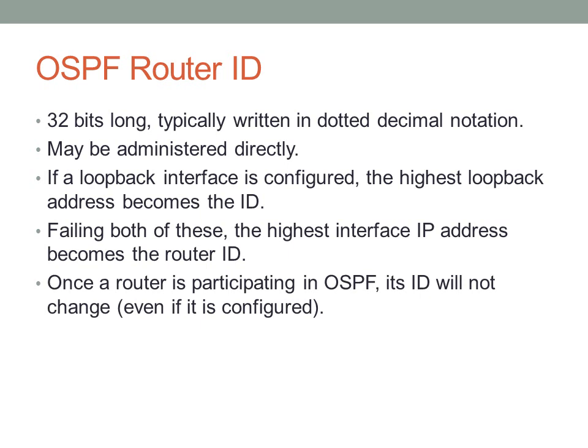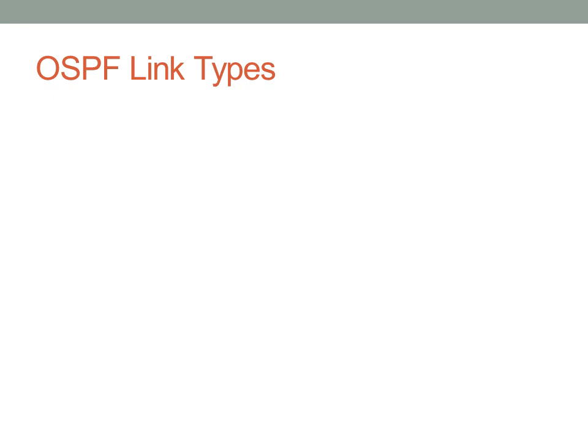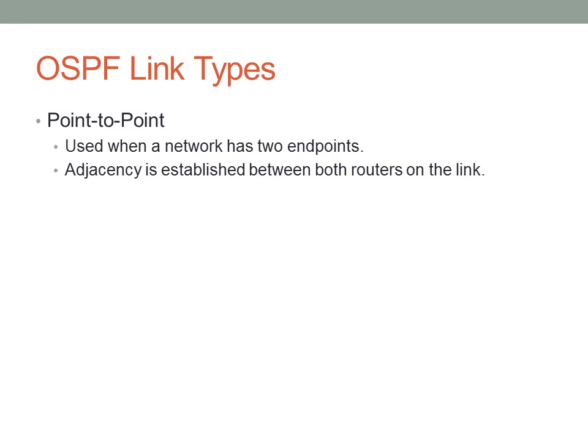Once a router is participating in OSPF, its ID does not change. So if you add an interface with a higher IP address — say your ID is 192.168.1.1 and you add 193.168.1.1 — the OSPF router ID will not change once it's participating in OSPF. Now, the first link type to know about is point-to-point, used for point-to-point networks. You have two endpoints, and those are the only possible hosts. Adjacency is established between both routers on the link.